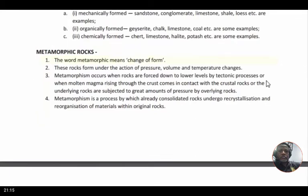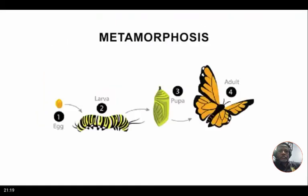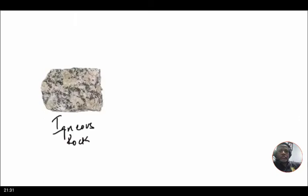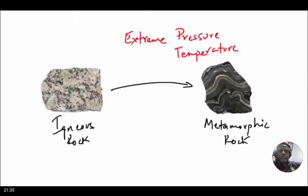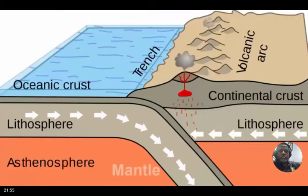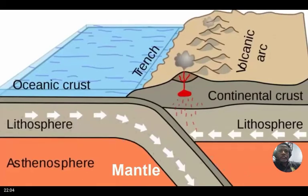Now we go to the last division: metamorphic rock. The word metamorphic means change of form — just like metamorphosis where a caterpillar transforms into a butterfly. These rocks form under the action of pressure, volume, and temperature changes — it takes an incredible amount of pressure and temperature to change rock. Tectonic movement — the movement of plates on which oceans and continents reside — provides that pressure and heat. When two plates converge, a smaller plate subducts under a larger plate, pushing sedimentary and igneous rocks toward the mantle, where pressure and heat transform them into metamorphic rocks.